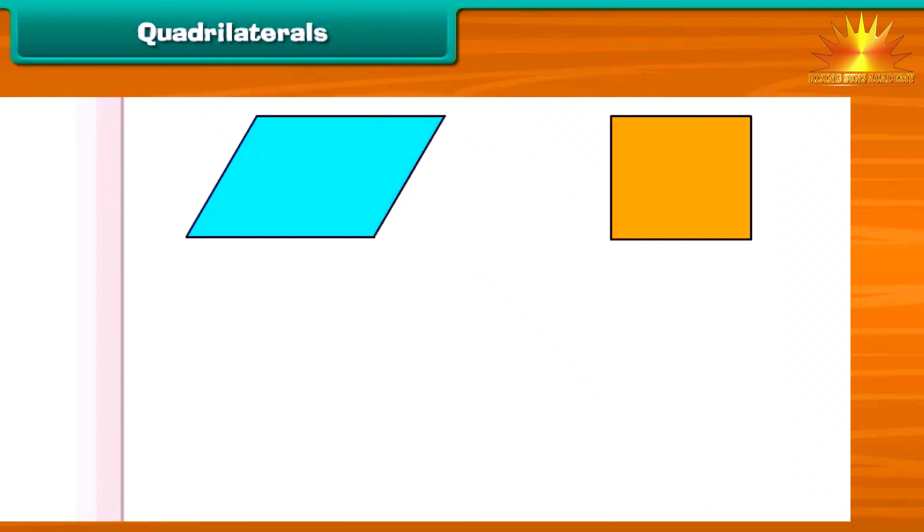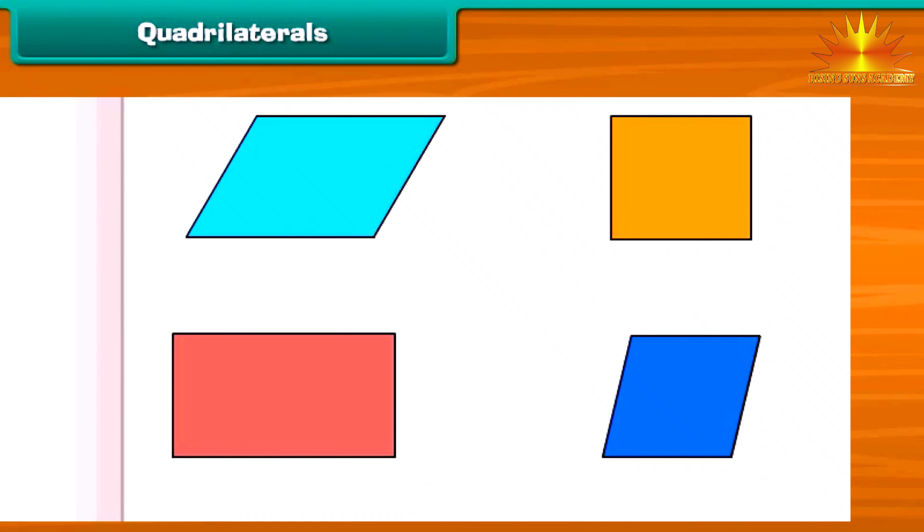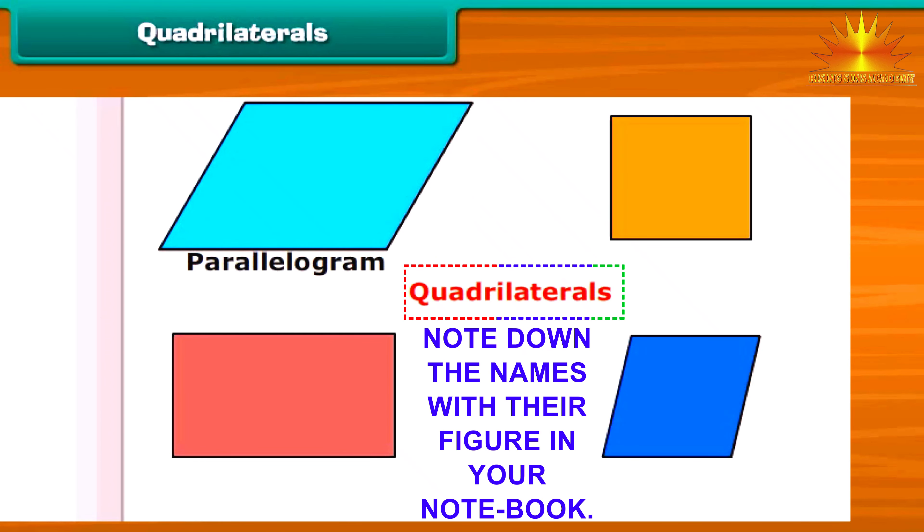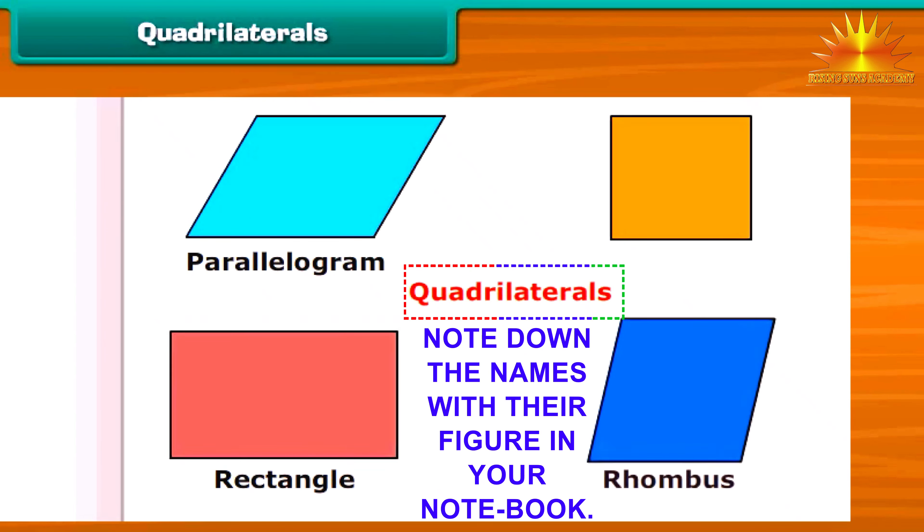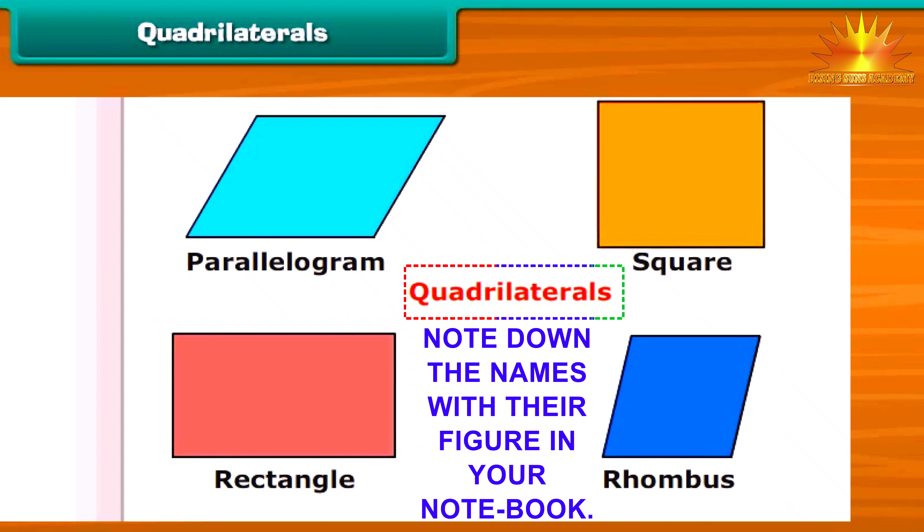What will you call those polygons which are formed by four line segments? Such polygons are called quadrilaterals. There are several types of quadrilaterals. These are parallelogram, rectangle, rhombus and square. Let us discuss each type in detail.